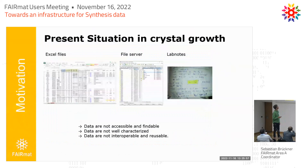This is the typical situation you find in the Crystal Growth Institute. You have Excel files where data is stored, file servers where people store their data, and of course lab notes. Looking at this, it's quite obvious that it's hard to work with this data — you have to have the person who created the data next to you to explain what they were doing and how you can reuse it. This is really the opposite of FAIR, as we just heard from Claudia.